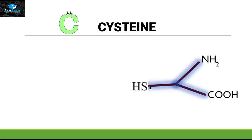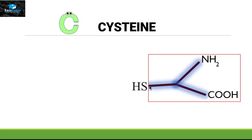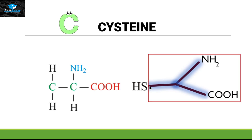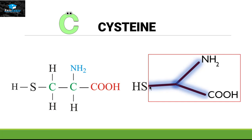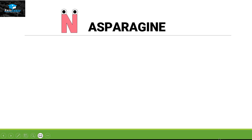Next is cysteine — the symbol is C. We take the fork structure and add an SH group to it. Carbon attaches itself to the sulfur group. Sulfur belongs to group 6, so it makes two bonds: the first bond is already made with the beta carbon, and the second bond is made with hydrogen. This is the official structure for cysteine.